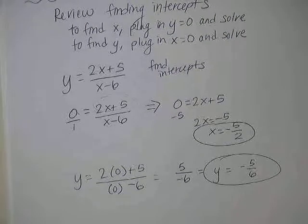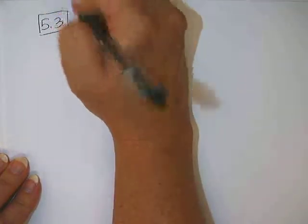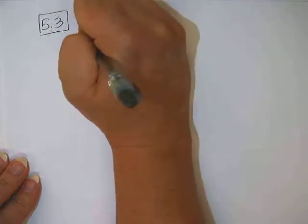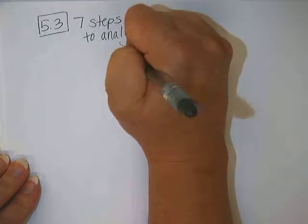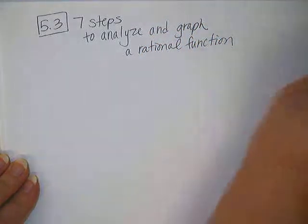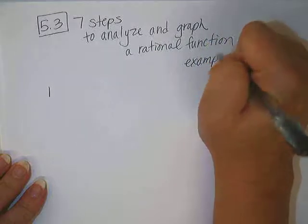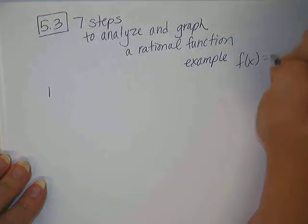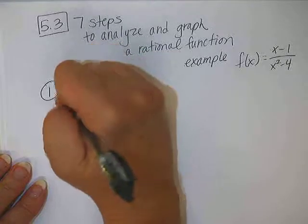Okay, we're now going to look at what you're going to be doing in section 5.3, which is taking one problem and doing a bunch of steps to ultimately graph a rational function. So we are doing seven steps to analyze and graph a rational function. Here are the steps, and as I give each one of them to you, we're going to do it on this example. So the example will be f of x equals x minus 1 over x squared minus 4.